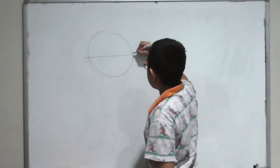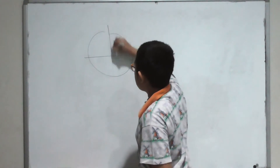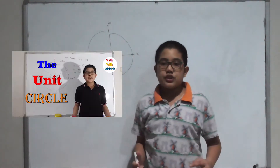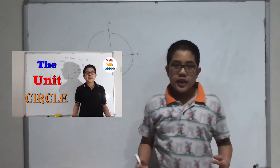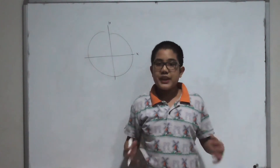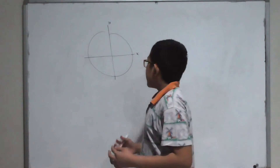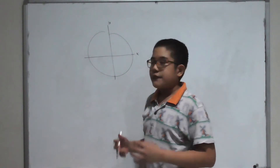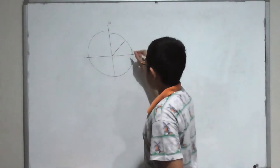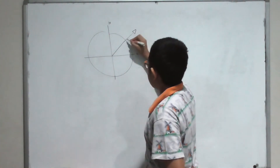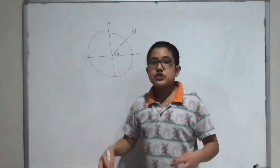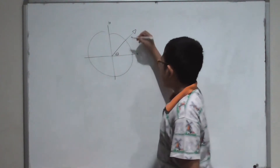This is going to be the x value and this is going to be the y value. If you want to know more about the unit circle, don't forget to check my previous video where I discuss everything about the unit circle — its functions, its basics, everything. Let's say I start with an angle of theta, so these are the two lines that will make the angle.